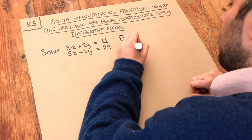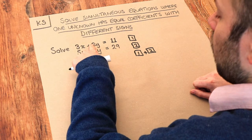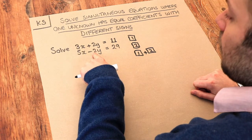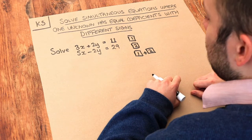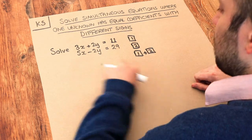And the reason we're adding them is because when we add 2y and negative 2y, 2 plus minus 2 is just 0, they're going to cancel. So let's add these two equations, like we did in the previous video, but adding rather than subtracting this time.